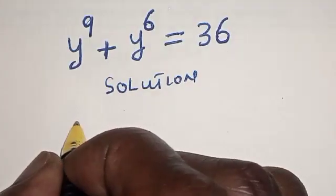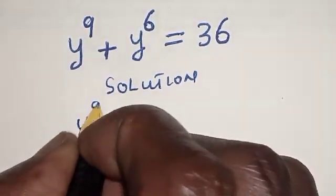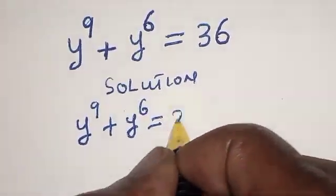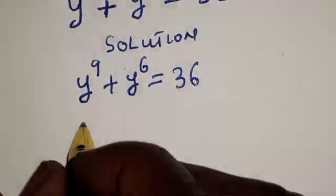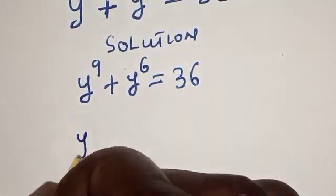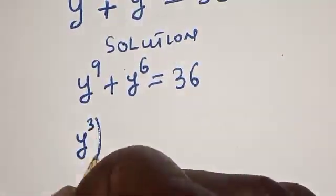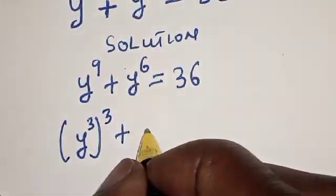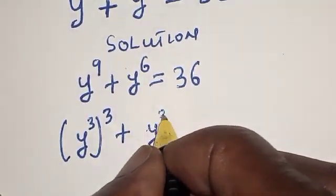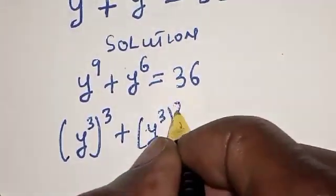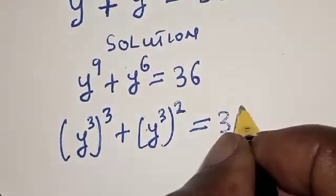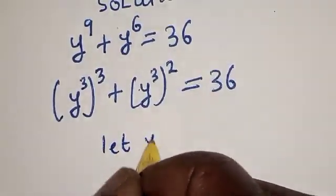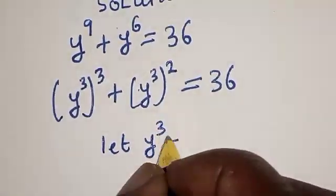We have the given equation y raised to power 9 plus y raised to power 6 is equal to 36. Then y raised to power 9 can be expressed as y raised to power 3 cubed, and y raised to power 6 is the same as y raised to power 3 squared, so the equation becomes that expression equal to 36. Now let y raised to power 3 equal to t.